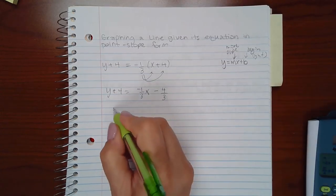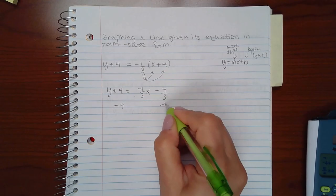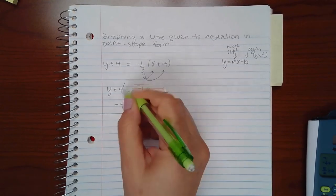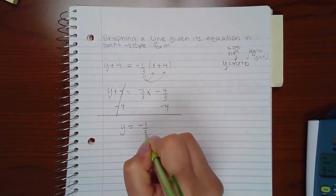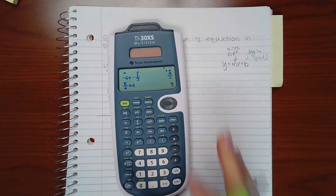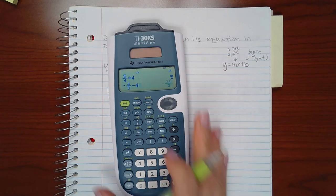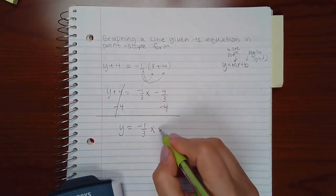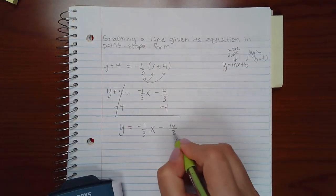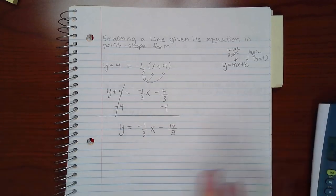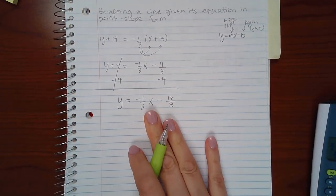Then if I minus 4 to both sides, I get that y equals negative one-third x. And let's see, negative four-thirds minus 4 is negative 16 over 3. Now this is the equation that I would use to graph.